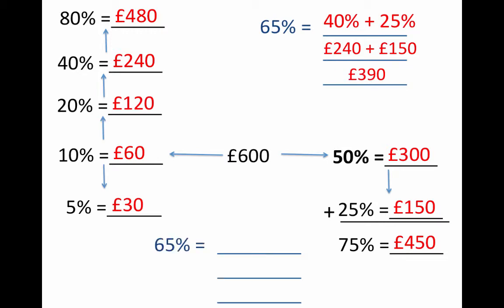This wasn't the only way to do it, however. Looking at the screen that I already have, I can see that 75% take away 10% also gives 65%. So that would be £450 take away £60, which would give £390.